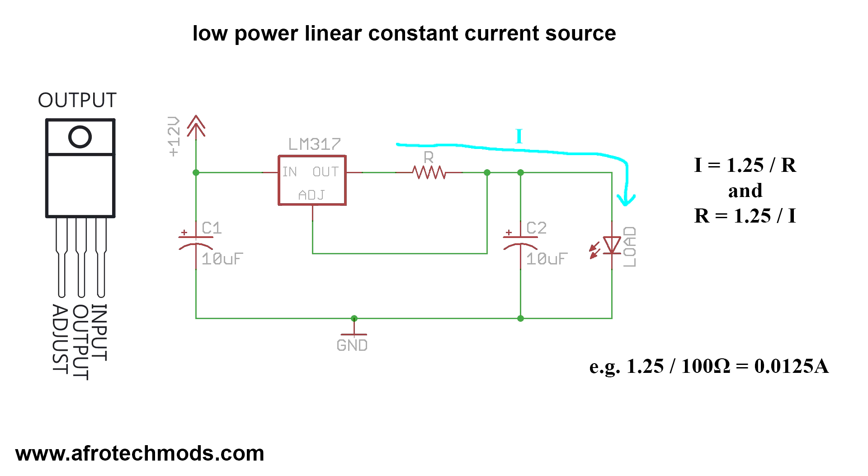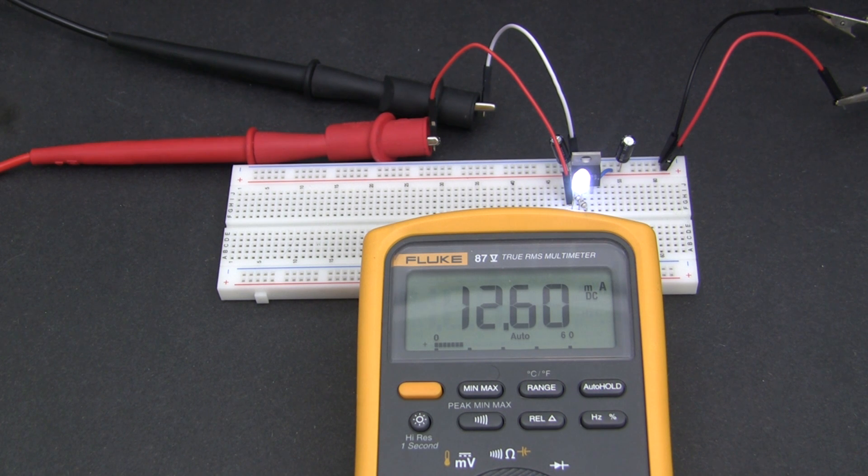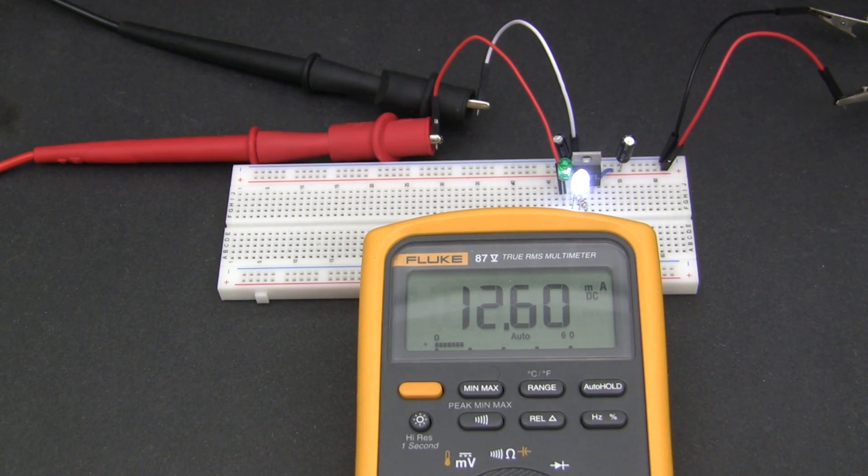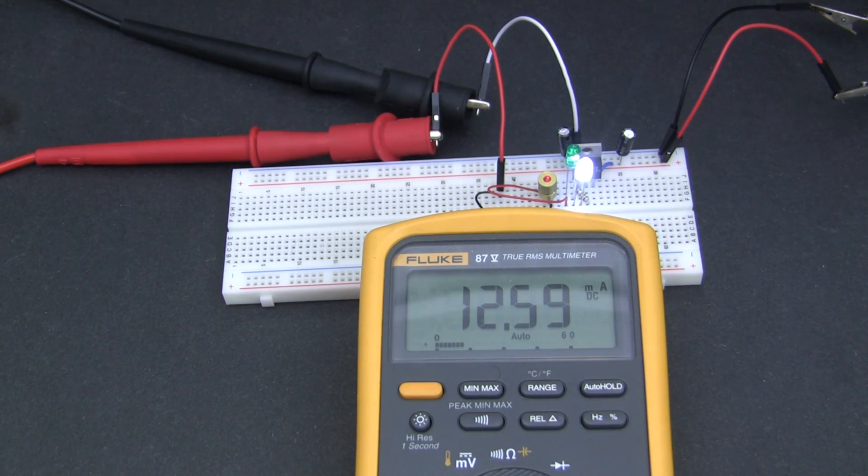In the example I showed you, I used a 100 ohm resistor which gave me a theoretical current value of 12.5mA. Now let's see what we're getting in real life. Here I'm pushing 12.6mA through an LED. If I add another LED, I still get 12.6mA. Let's add a laser diode to switch things up. It doesn't matter what the load is, the current stays the same.